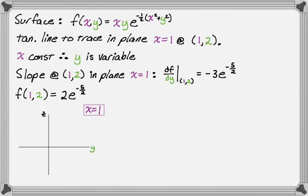And I know that I'm going to be at the point y equals 2, z equals 2e to the negative five-halves. Squeeze that in. So we're going to have a point in the plane x equals one. And at that point, we calculated the slope is going to be negative 3e to the negative five-halves. So I don't really know what that is, but I do know that it's negative. So I'm just going to sketch a line with a negative slope.